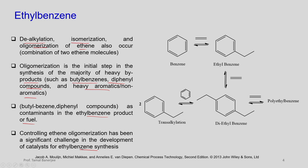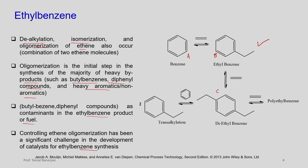We have to design a catalyst in such a manner that it only allows ethyl benzene to pass through its pore, so that it becomes selective and does not allow other products to pass through. You have benzene, you add ethene, you get ethyl benzene — this is our desired product. Sometimes this product, if we call benzene A, ethyl benzene B, diethyl benzene C — B and C can be in equilibrium as ethene adds up to form diethyl benzene, which can further add another ethene to form polyethyl benzene.